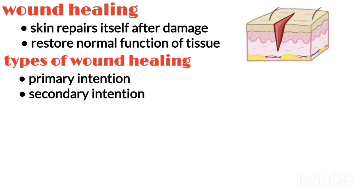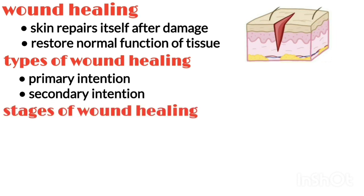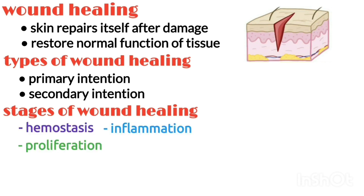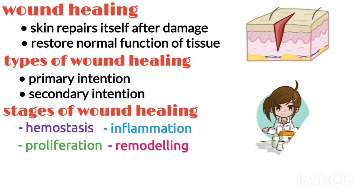In both types, there are four stages which occur: hemostasis, inflammation, proliferation, and remodeling. In this video, we shall look at the mechanisms of wound healing, factors affecting healing, and wound infection.